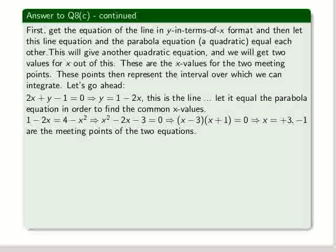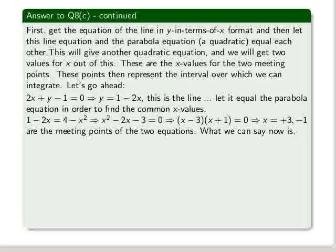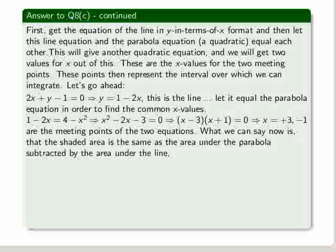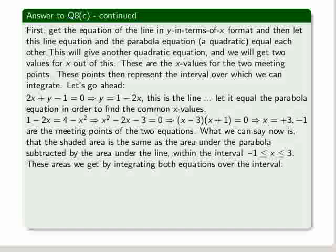And these are the meeting points of the two equations in terms of x. The x values of the meeting points of the two equations. What we can say now is that the shaded area is the same as the area under the parabola, subtracted by the area under the line. Within the interval x greater than or equal to minus 1 and less than or equal to 3. These areas we get by integrating both equations over the interval. Let's go ahead.